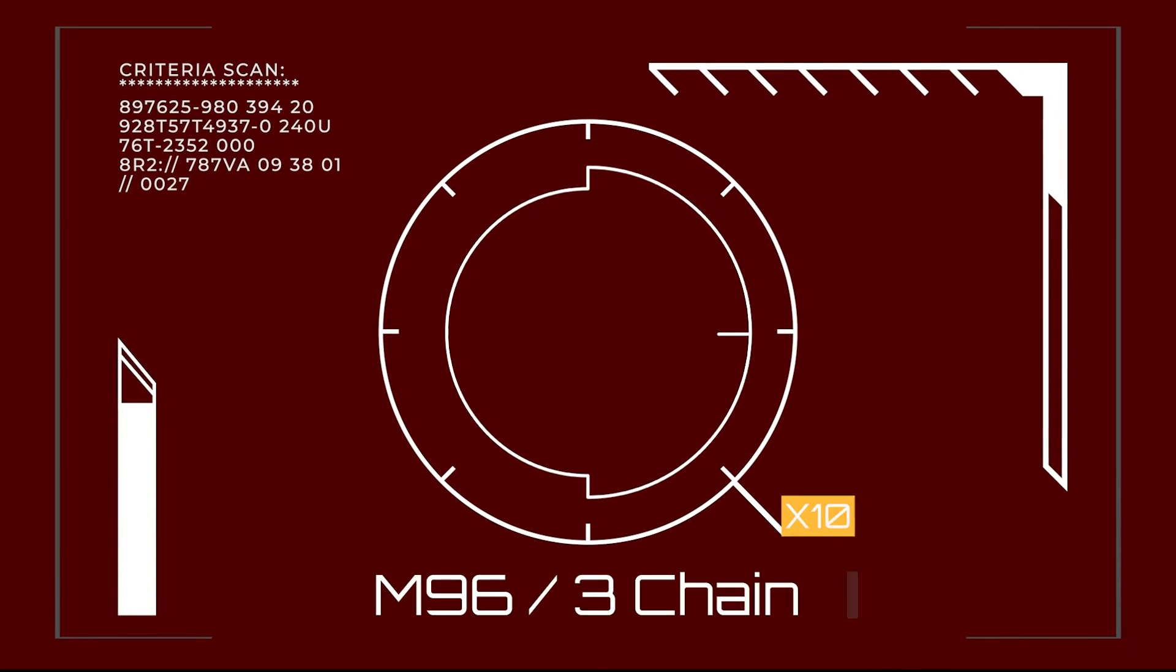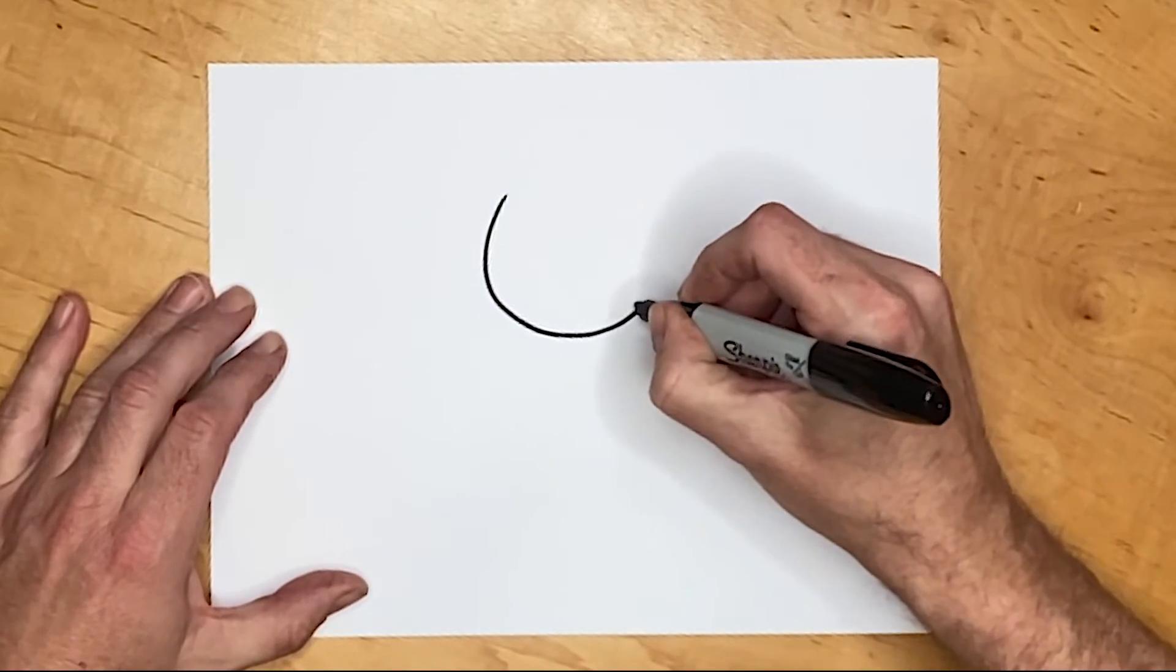So what about the 3-chain engine which is an M9603? Even though it's a lower number it actually came after in 2002. Very, very similar but there are differences.